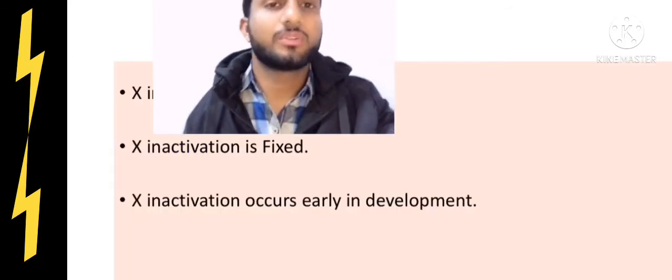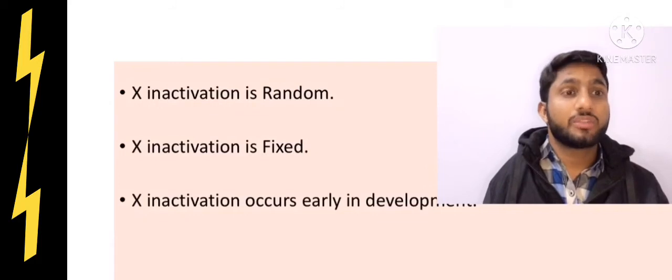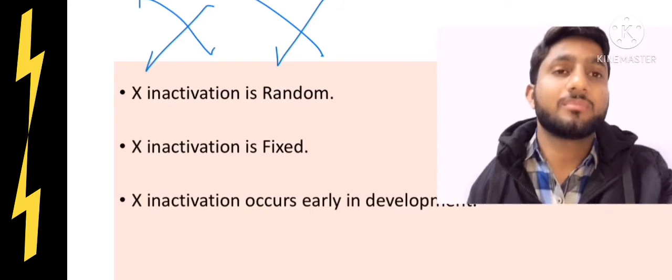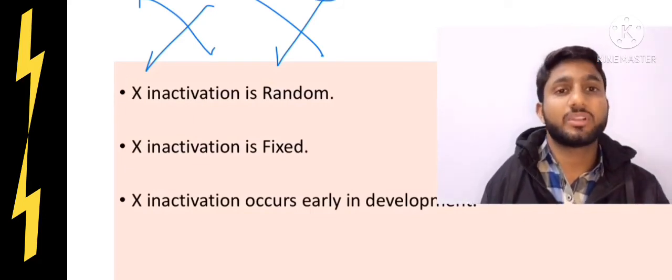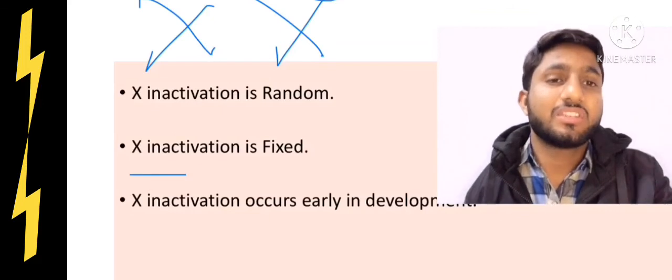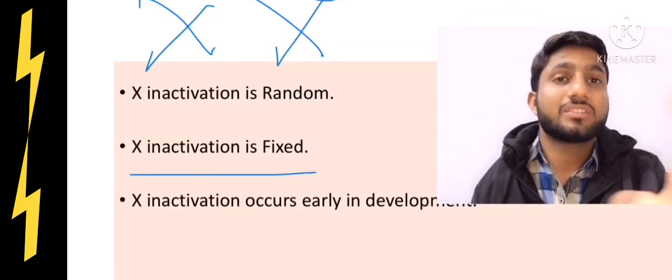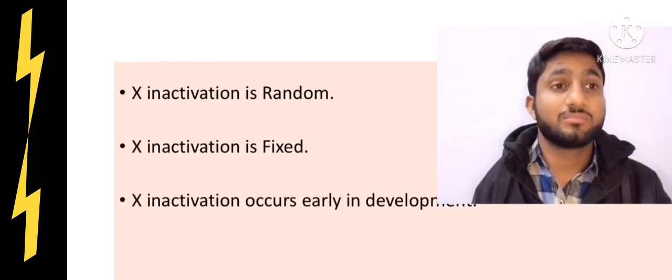X inactivation is random, meaning Barr body formation could be random. There are two possibilities: one of them could be activated and one could be converted into a Barr body. X inactivation is fixed. This is a very important point. It means one of the X chromosomes will be inactivated. This is a fixed phenomenon that cannot be changed.